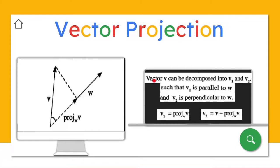Let's see here the summary of what we have done just now: vector v can be decomposed into v1 and v2 such that v1 is parallel to w, and this is your v2 here, which is perpendicular to your w.